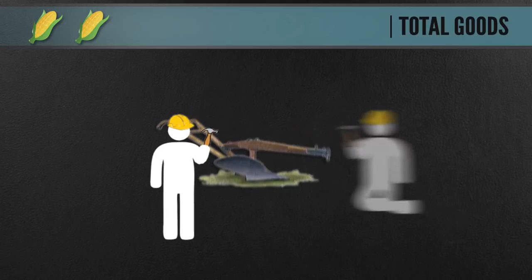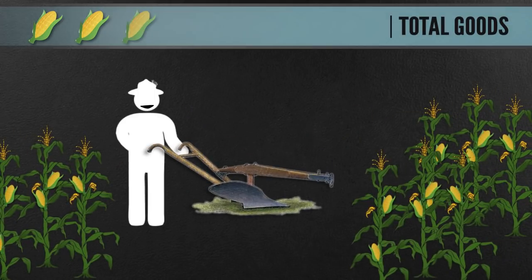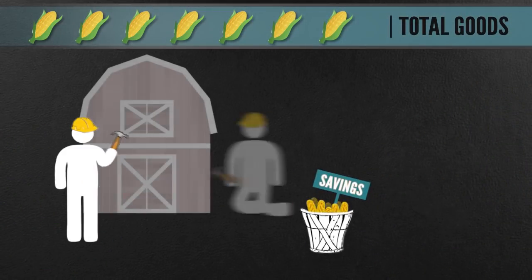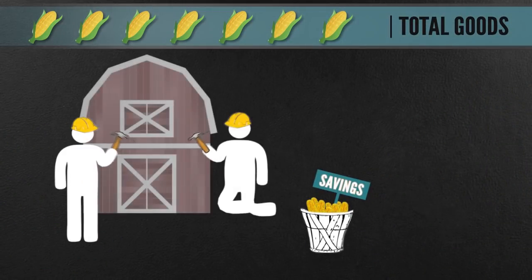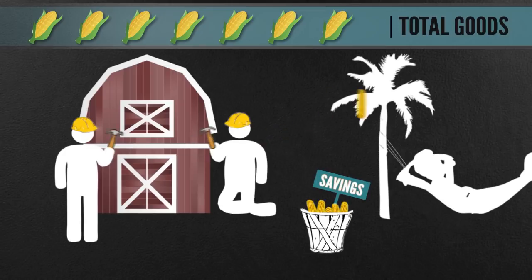Once it's finished, they can produce more efficiently. And the total amount of goods will grow. On top of that, because they no longer have to worry about starving, time is freed up. They can now choose to produce other goods or services. Or just relax and enjoy their free time.